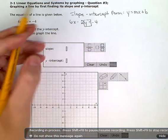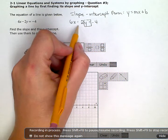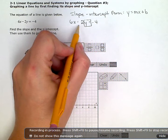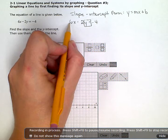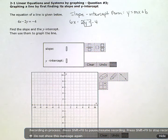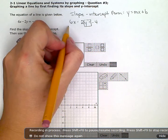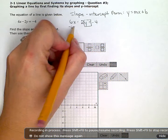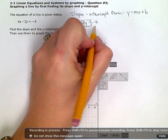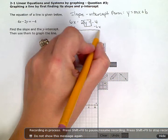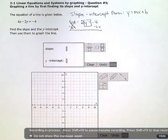So before I deal with the coefficient, the number attached directly to the y itself, I'm going to get rid of this x term over here. So since this is a positive x, I'm going to subtract 6x from both sides and simplify to eliminate it from the left over there.